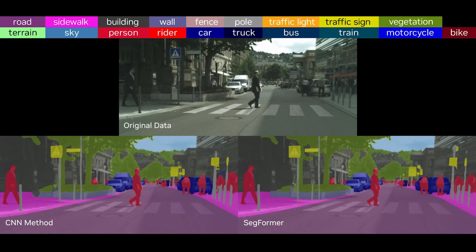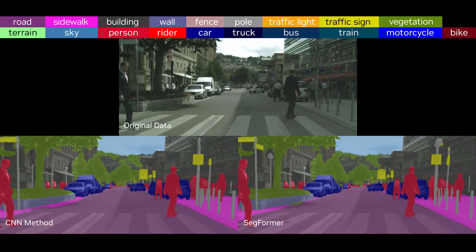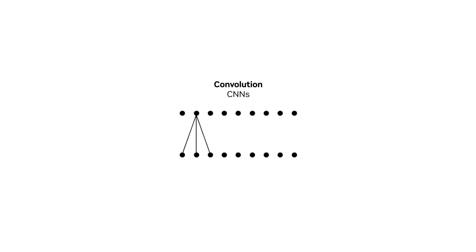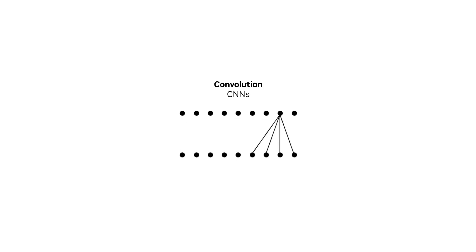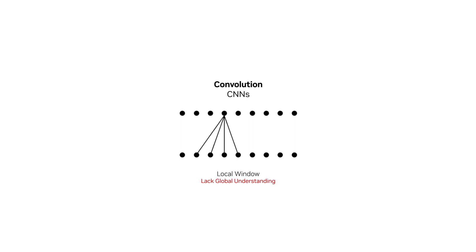Semantic segmentation assigns a category to every pixel in an image, typically using convolutional neural networks, or CNNs. These networks use local window-like operations. They are efficient, but lack a global understanding of the image.